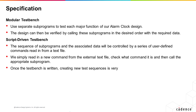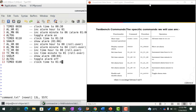The design can be verified by calling sub-programs in the desired order with the required data. To make the test bench as flexible as possible, the sequence of sub-programs and associated data will be controlled by a series of user-defined commands read in from a text file called command.txt. We simply have to read in a new command from the external text file, check what command it is, and then call the appropriate sub-program.